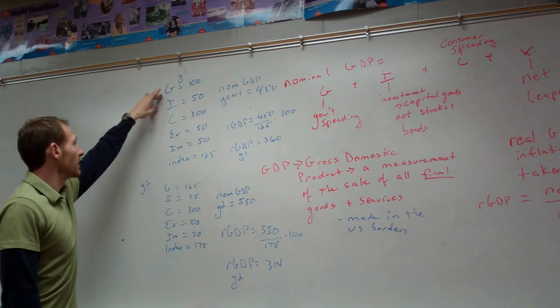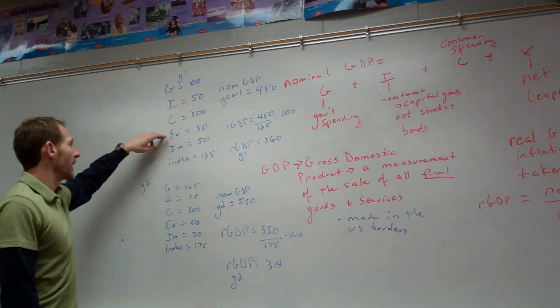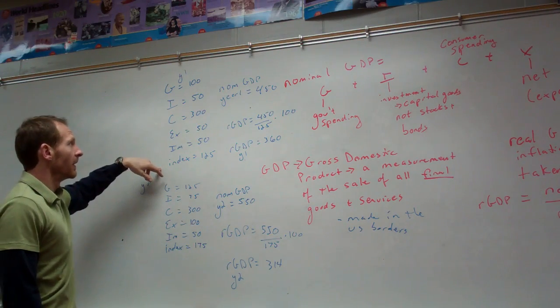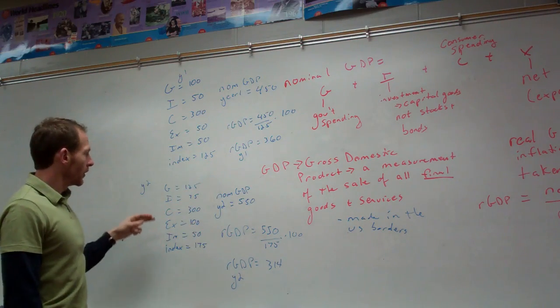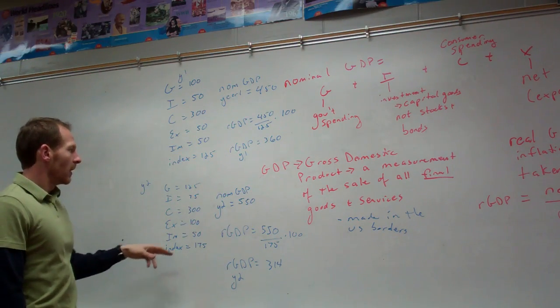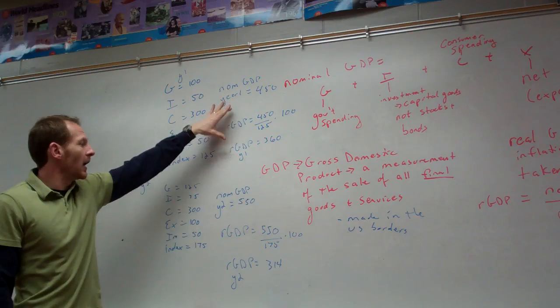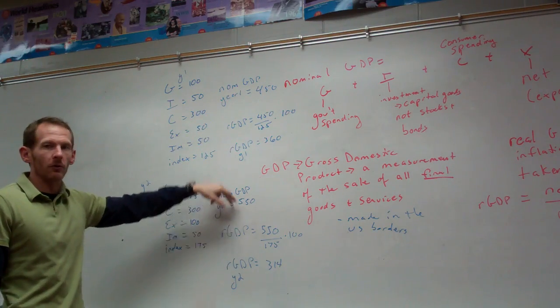So, you can see this is year one, and this is year two. Year one, G equals 100, I 50, C 300, and you can see this, the index is 125. So, year one's GDP is 450, whereas year two's GDP, and you can see the numbers, are 550. So, just by looking at nominal GDPs, you'd think year two was better than year one.